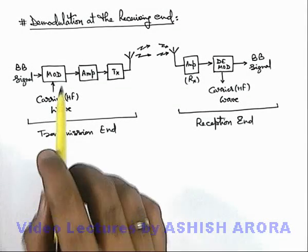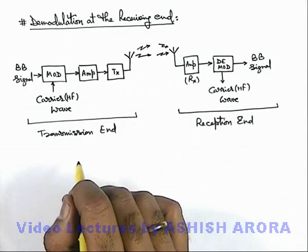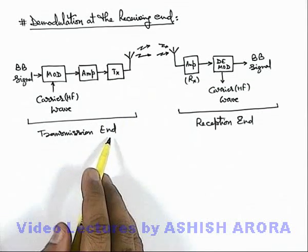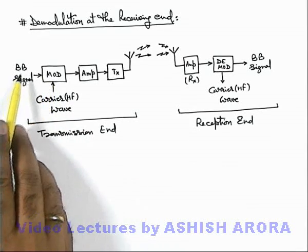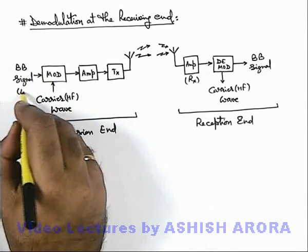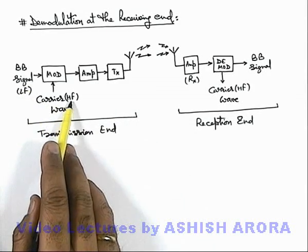Let us now understand the demodulation at the receiving end. In the previous section we have discussed that at the transmission end, a modulator is used to mix a baseband signal, which is a low frequency signal, with a carrier wave which is a high frequency wave.